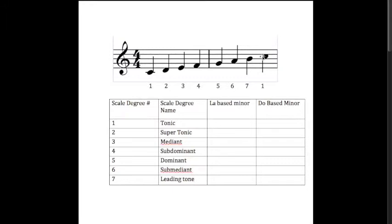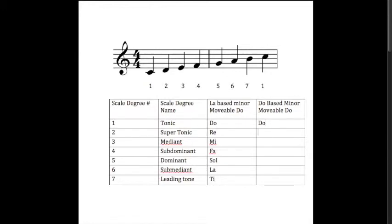Now, if we were to assign solfège syllables to this using movable do — starting with la-based minor movable do — since we're in a major key, the first scale degree is do, the second is re, then there's mi, then fa, then sol, then la, then ti. The same goes for do-based minor: do, re, mi, fa, sol, la, ti. So right now in major keys, both do-based minor and la-based minor agree: do is the first scale degree, re is the second, mi is the third, fa is the fourth, sol is the fifth, la is the sixth, and ti is the seventh.